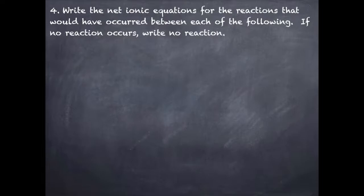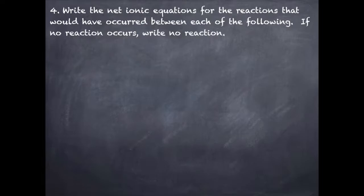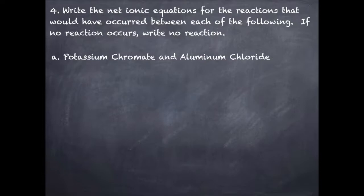Before you complete the lab, you need to read it and write out the net ionic equations for all the reactions that could potentially occur. You have six different compounds that are going to be combined — for example, one and two, one and three, one and four, one and five, one and six, two and three, two and four, and so on. You need to know what the net ionic reaction would be for each combination. If no precipitate forms, that means no reaction occurs, and you would write that.